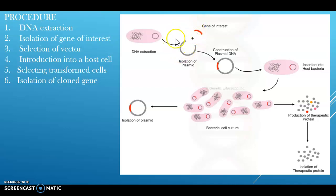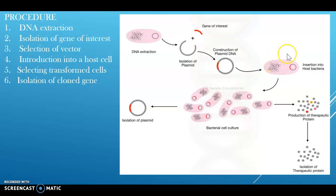After the selection of the vector, we have the vector and the gene of interest, and then they are introduced into the host cell. To obtain multiple copies of the vector along with the gene of interest, they must be introduced into a host cell. The host cell should multiply at a faster rate — usually we go for bacteria. A suitable and non-harmful bacterial system is chosen to insert the recombinant plasmid DNA for gene cloning.